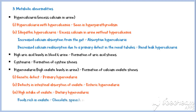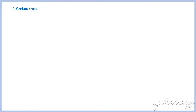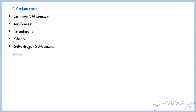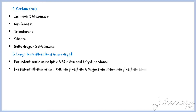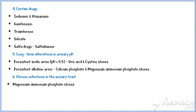Some common foods rich in oxalate include chocolate, spinach, and nuts. Certain drugs also induce formation of kidney stones, including antiviral drugs like indinavir, atazanavir, guaifenesin, triamterene, silicate drugs, and sulfa drugs like sulfadiazine. Long-term alterations in urinary pH are another cause: persistent acidic urine favors formation of uric acid and cystine stones, whereas persistent alkaline urine favors formation of calcium phosphate and magnesium ammonium phosphate stones. Chronic infections in the urinary tract also promote formation of urinary stones, especially magnesium ammonium phosphate stones.